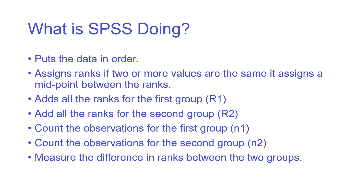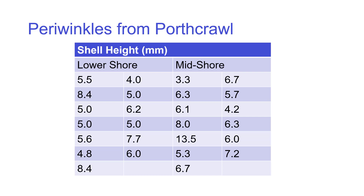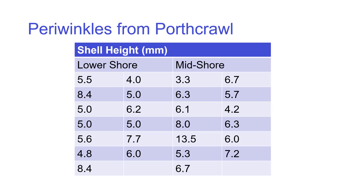What SPSS does to make that comparison is it first puts all the data in order. It finds the smallest value across the two groups and calls that rank one, the next one rank two, and so on through to the largest — which in this case is 13.5 — assigned rank n, the total number across both groups. If two or more values are the same, it assigns a midpoint rank, so if the fifth and sixth values are equal, both get rank 5.5.